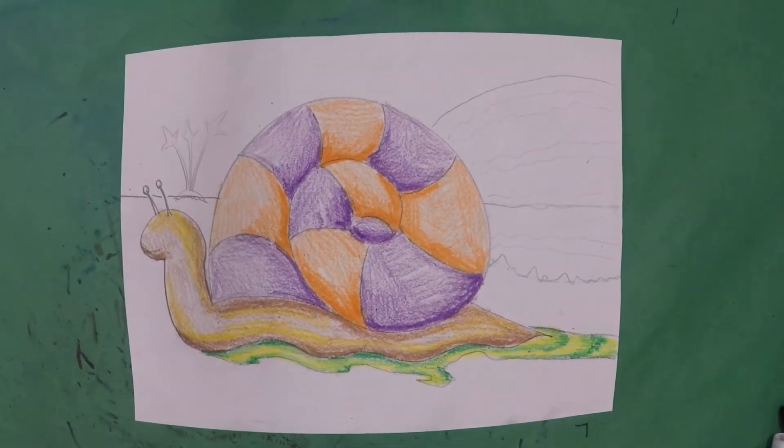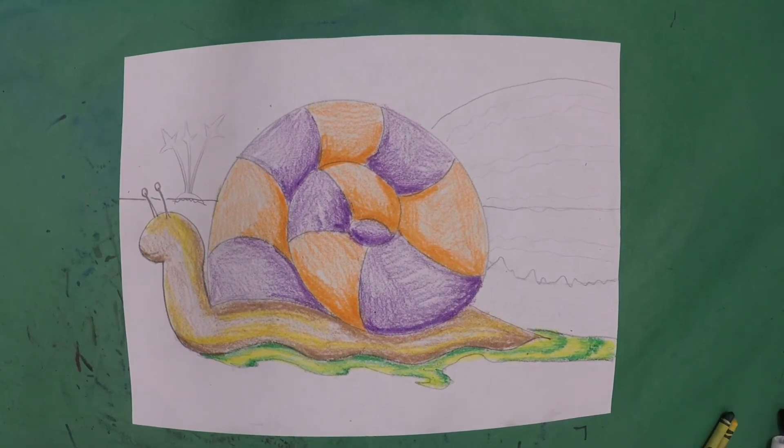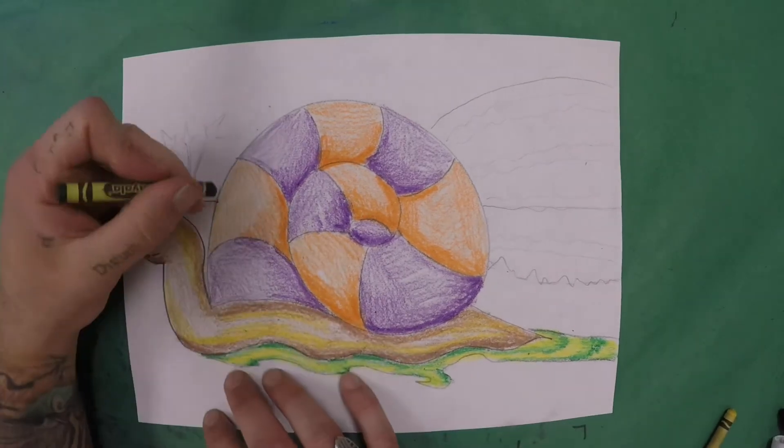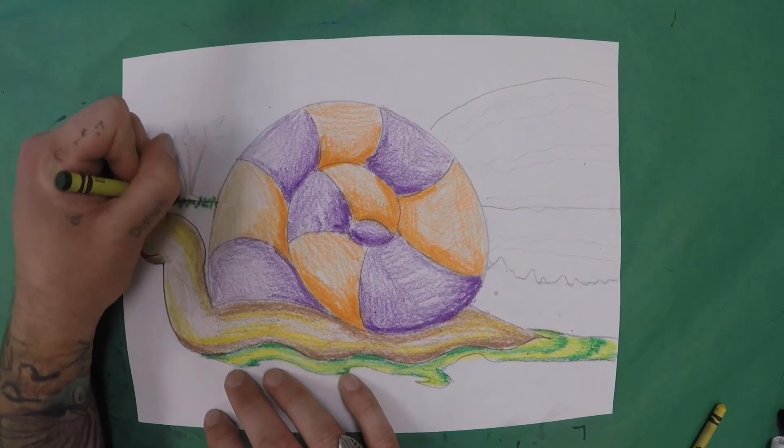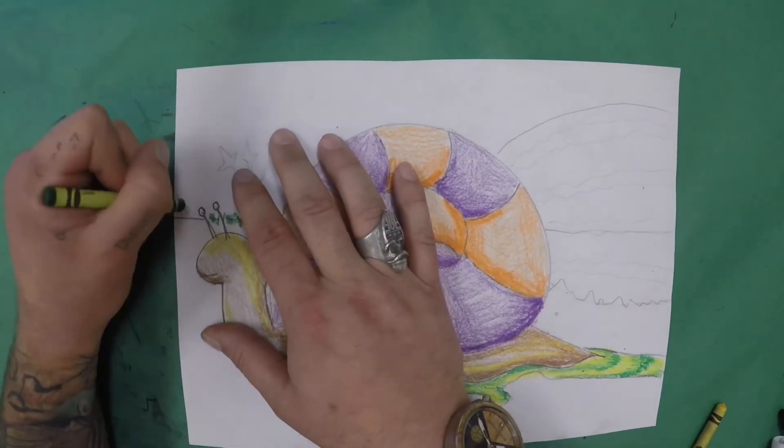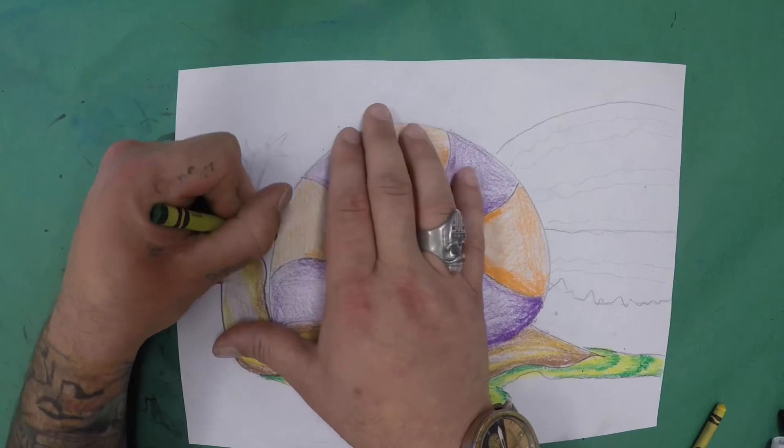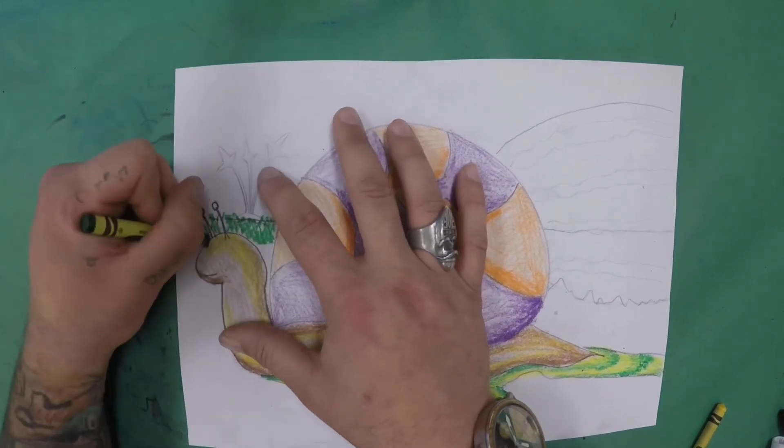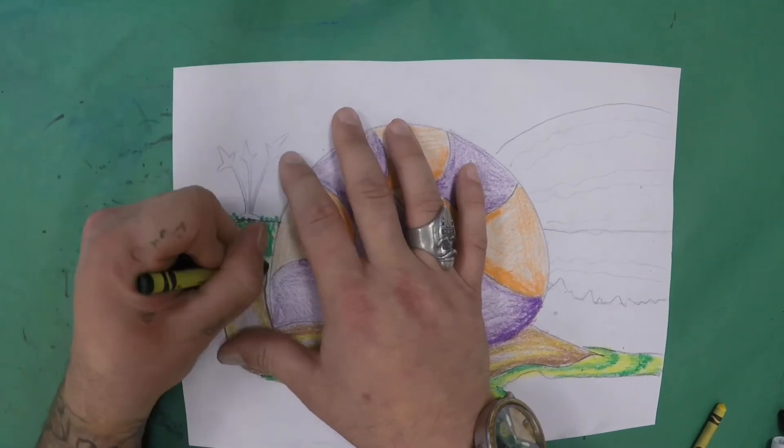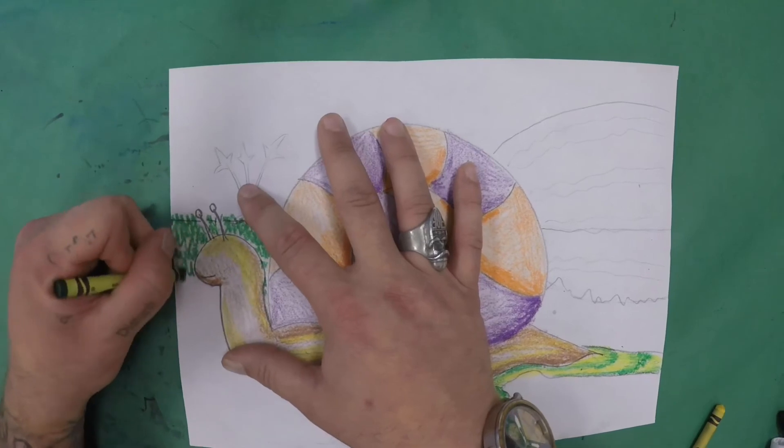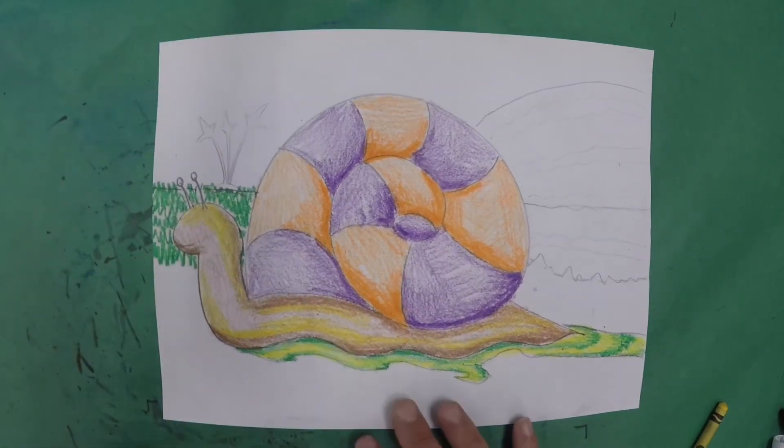Now the next thing we want to talk about is the ground. Because we're going to try to create some texture here when we do this ground. So what we want to do there is we want to start, instead of coloring it back and forth solid, what we're going to do is we're going to use a zigzag line. Just zigging and zagging. And we're going to keep repeating that line across. Now this is going to, doing it this way is going to leave some small areas of white showing. That's okay, we're going to fix that. We're going to fix that in just a minute. But we want to do this part first. So again, I'm going to speed up the camera so you guys can see me creating this texture.